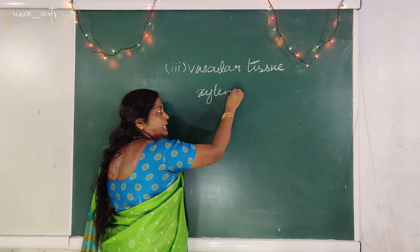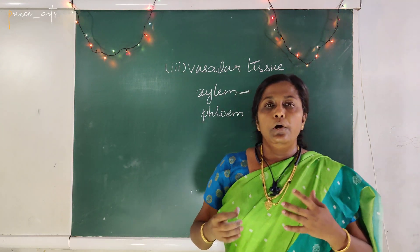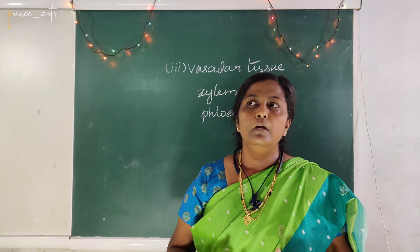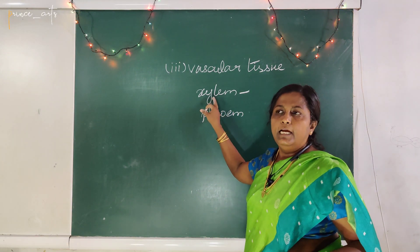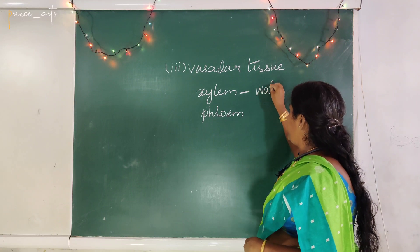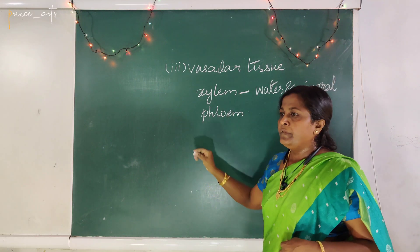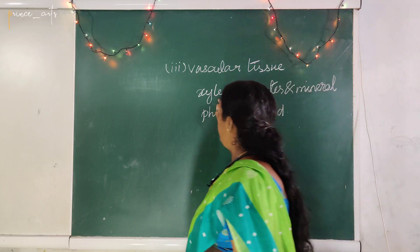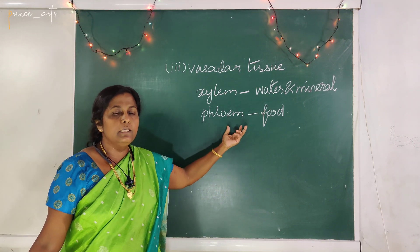Vascular tissue contains xylem and phloem. Xylem function is to transport water and minerals, while phloem transports food material. Vascular tissue contains xylem, which carries water and minerals, whereas phloem carries food material.